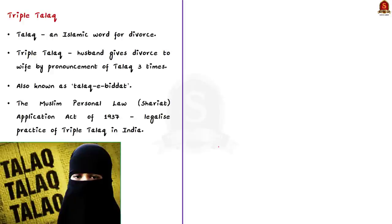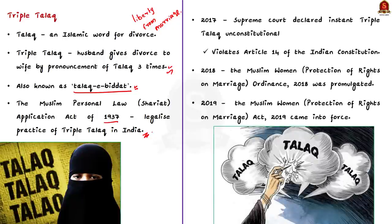Talak is an Islamic word for divorce — it denotes dissolution of marriage in which a Muslim man can terminate all marital ties with his wife. Under Muslim law, triple talak means pronouncing the word 'talak' three times to end the marriage instantly, also known as talak-e-bidat. The Muslim Personal Law (Shariat) Application Act of 1937 had legalized this practice in India. This gave Muslim husbands special privilege, leading to cases where talak was given through phone, SMS, email, or even social media.